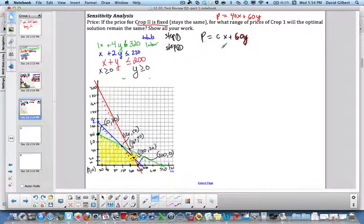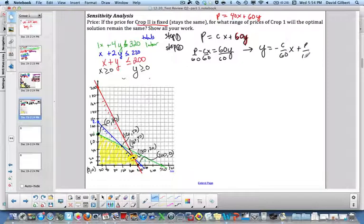We need to get in y equals form, so I subtract cx from each side and get p minus cx equals 60y. To get the slope, I divide by 60, and that gives me y equals negative c over 60 x plus p over 60. So my slope is negative c over 60.